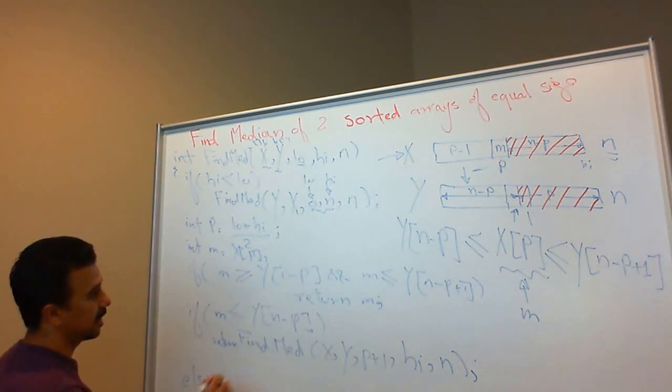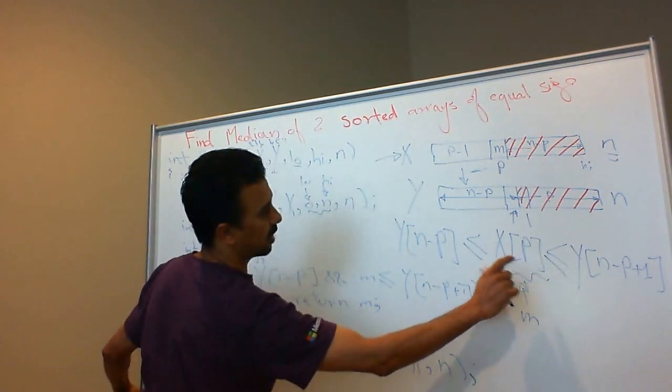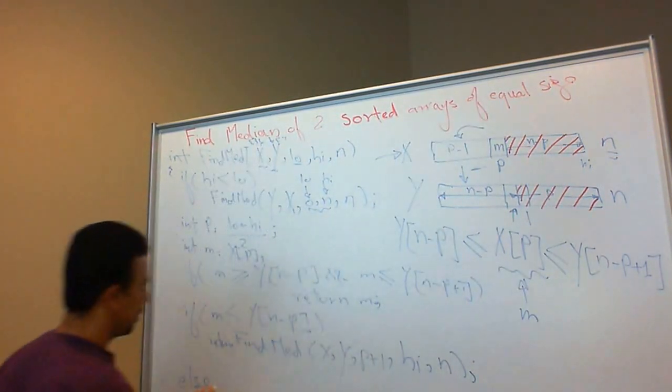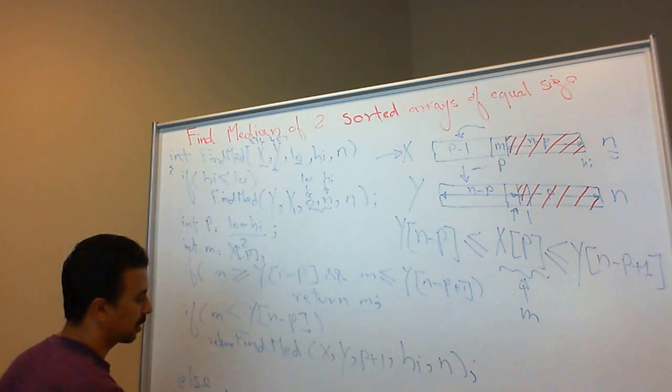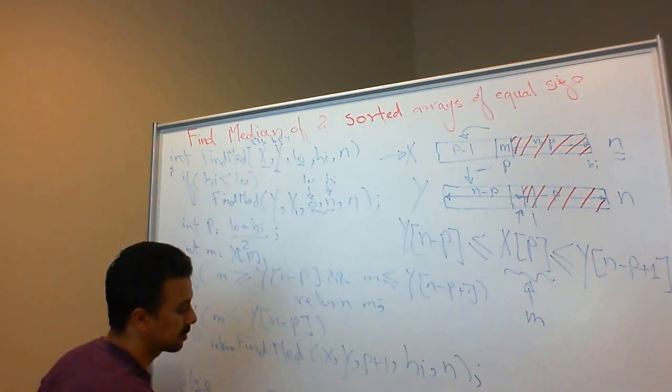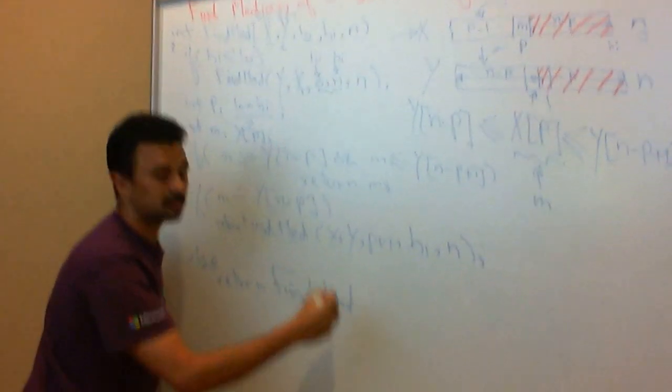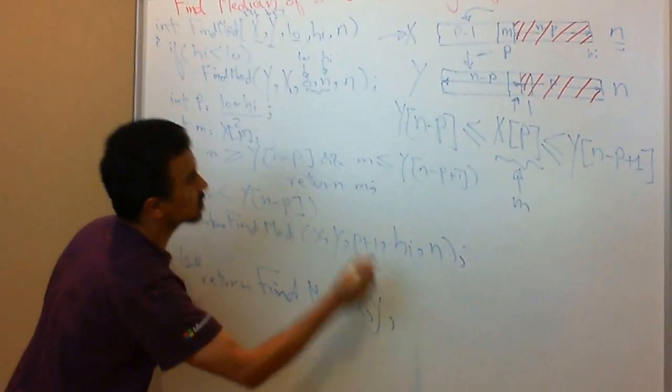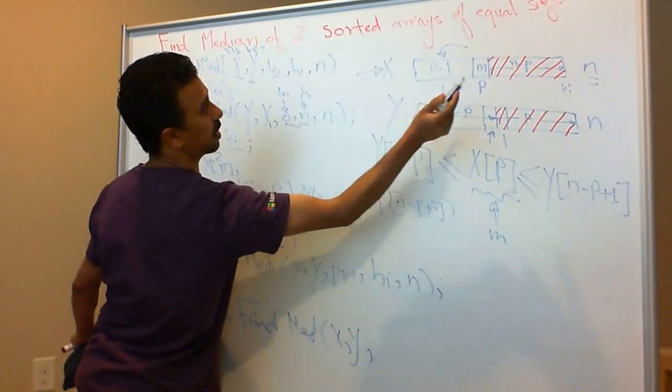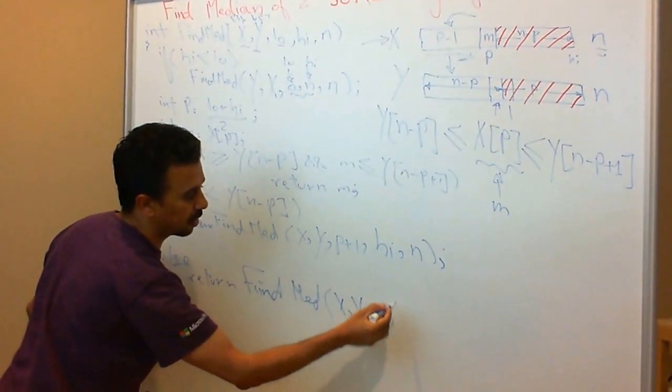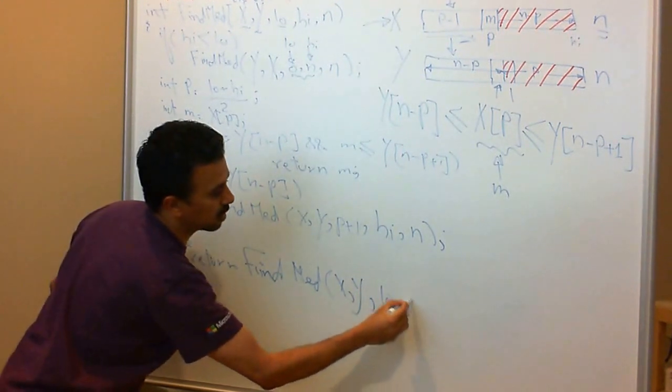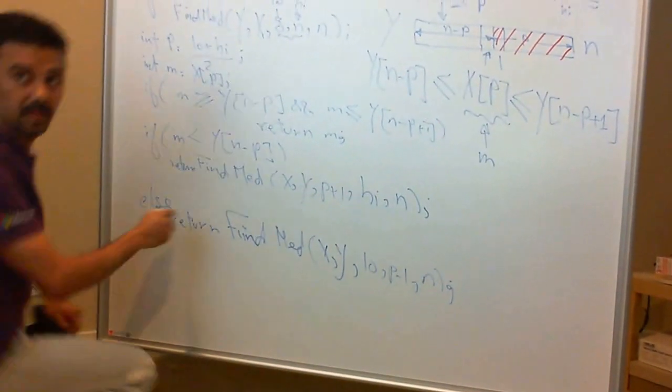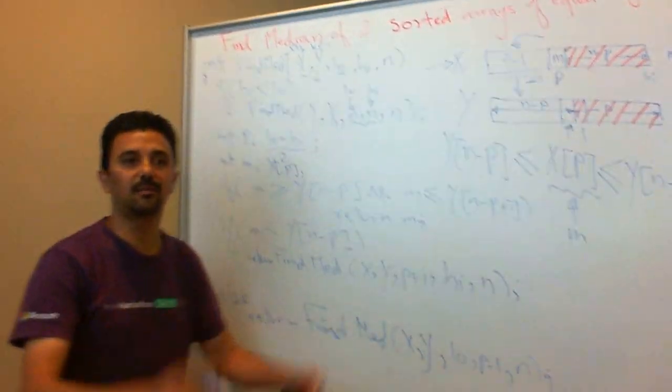Else, what does else mean? That case where x[p] is on the opposite side. If I'm here, then I should search in the other part. Then return FindMedian(x, y, low, p-1, n). In this case, I would start from the left side, this part starts from low but ends at p-1, and I pass n. And that's it. That's our algorithm for today. Thank you very much.